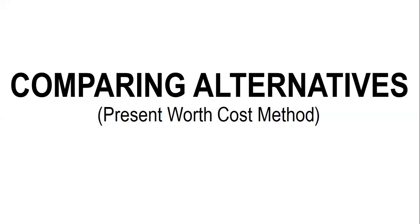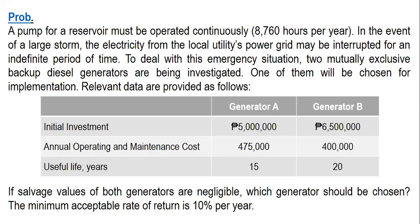In this video I'm going to solve a sample problem on comparing alternatives and I'm going to use the present worth cost method. Here's the problem: a pump for a reservoir must be operated continuously, that is 8,760 hours per year.